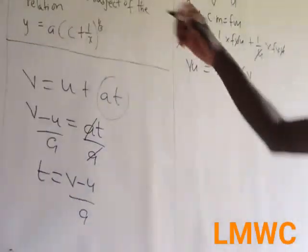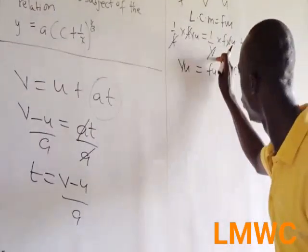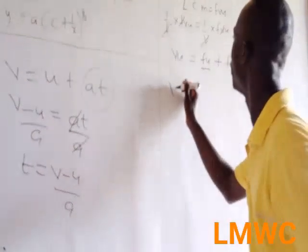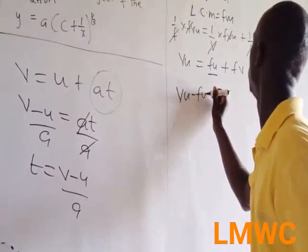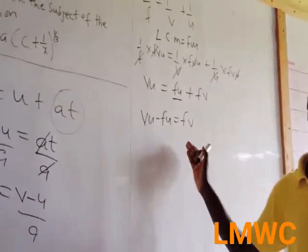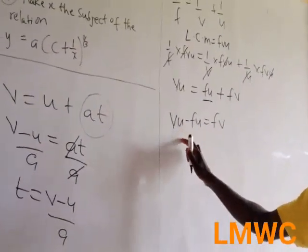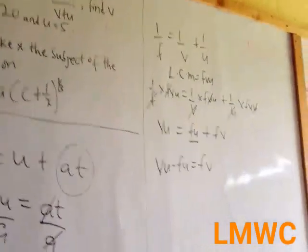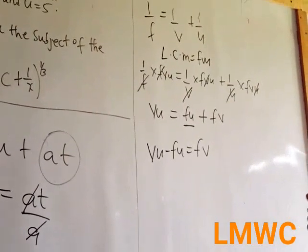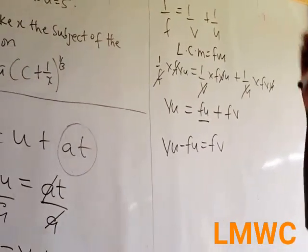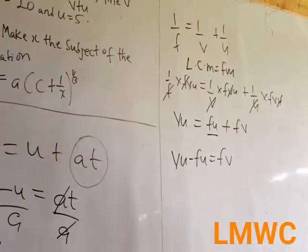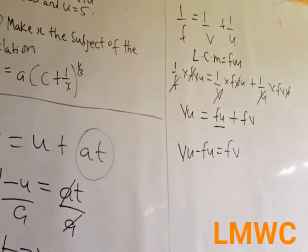But you have been asked to make u the subject. So you move the term with u — u is being attached to f — to the left hand side. It becomes vu minus fu = fv. If you have something like this, we factorize because the common factor must be worked out. Always for change of subject: if you are given a square root, first eliminate the square root by squaring both sides.